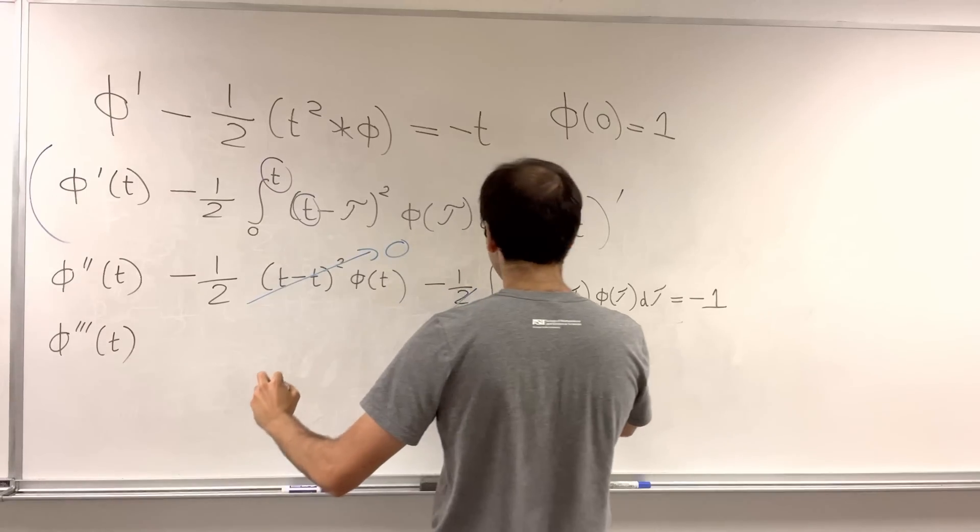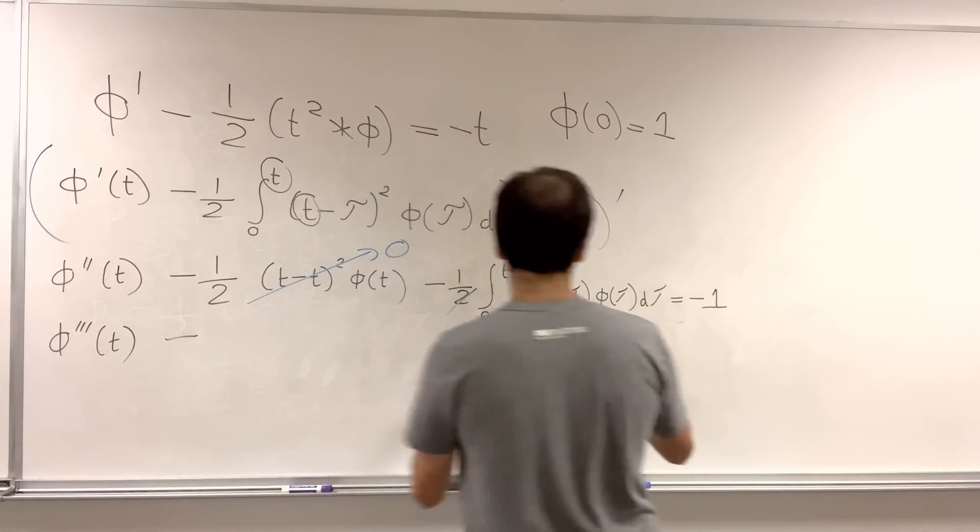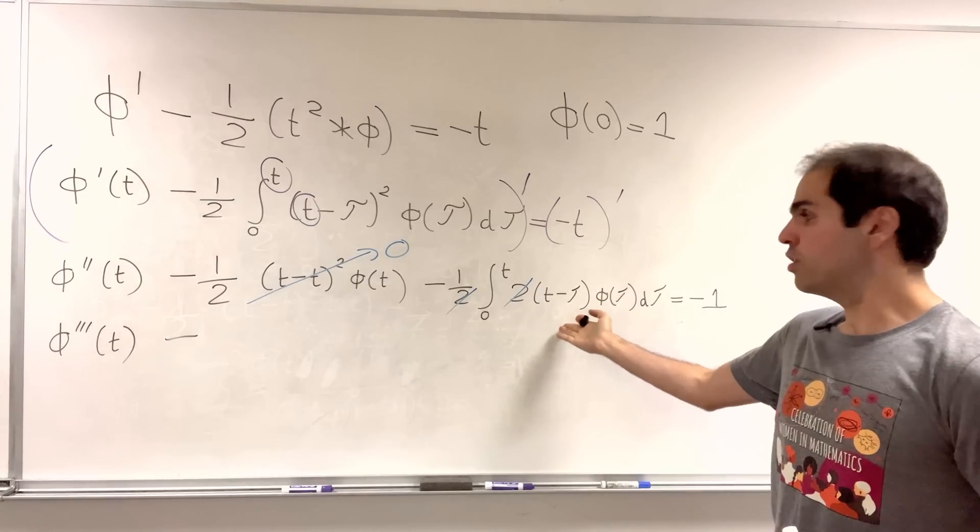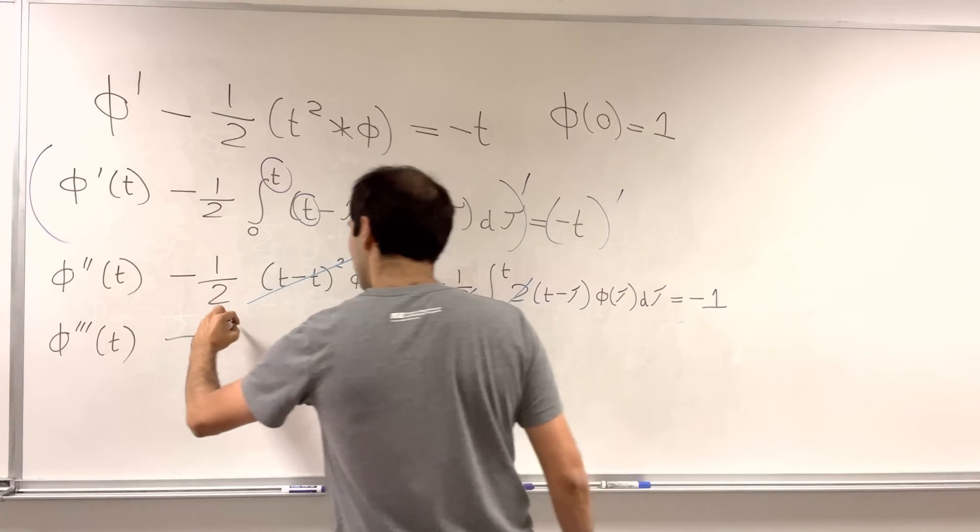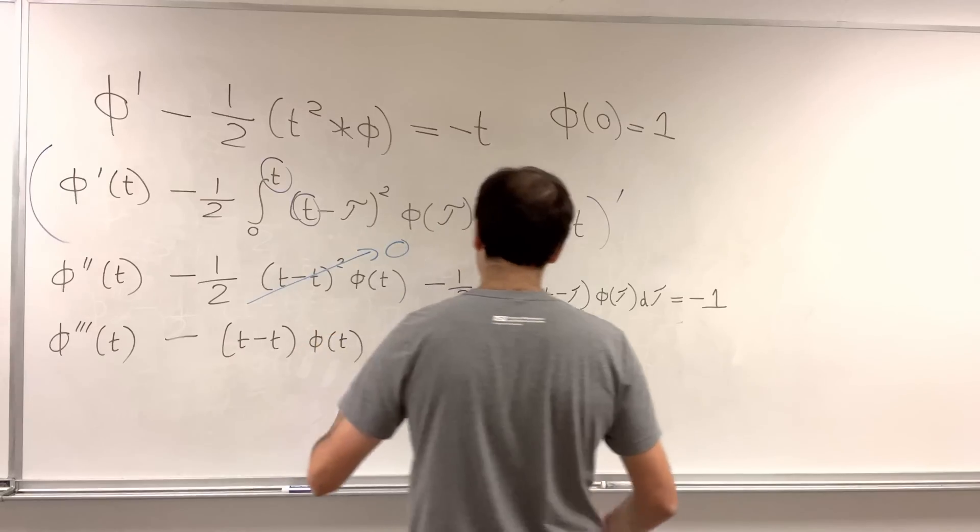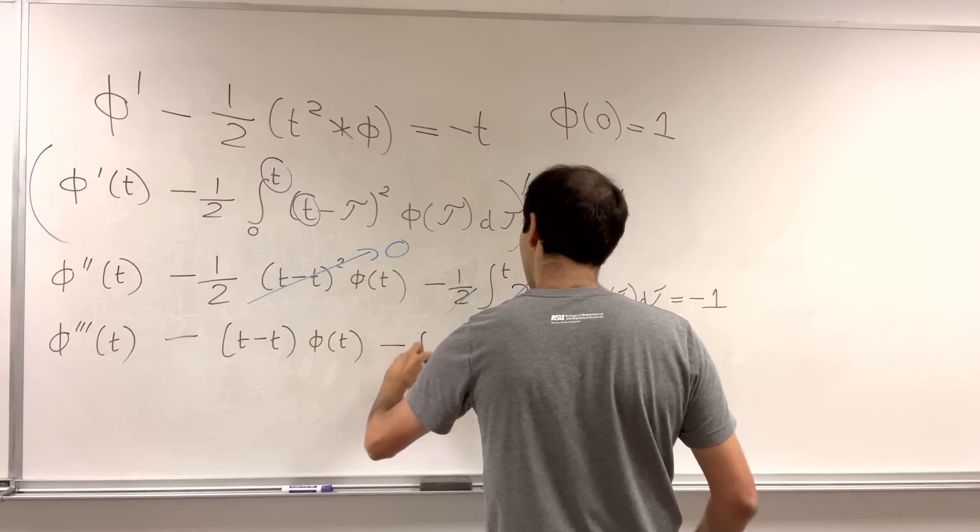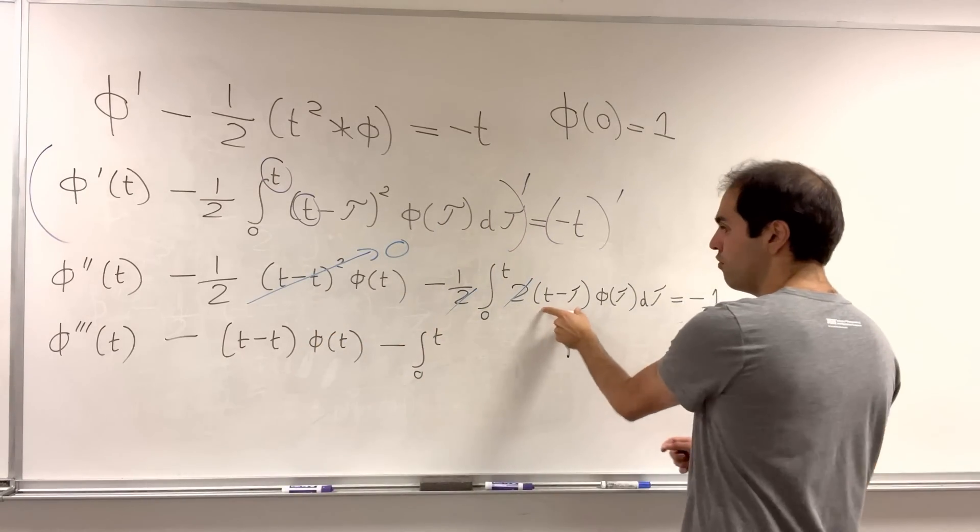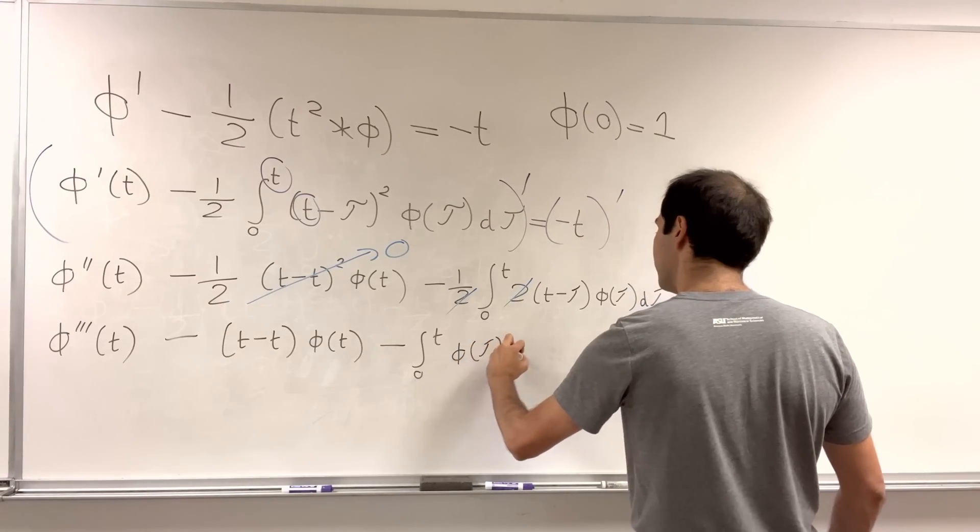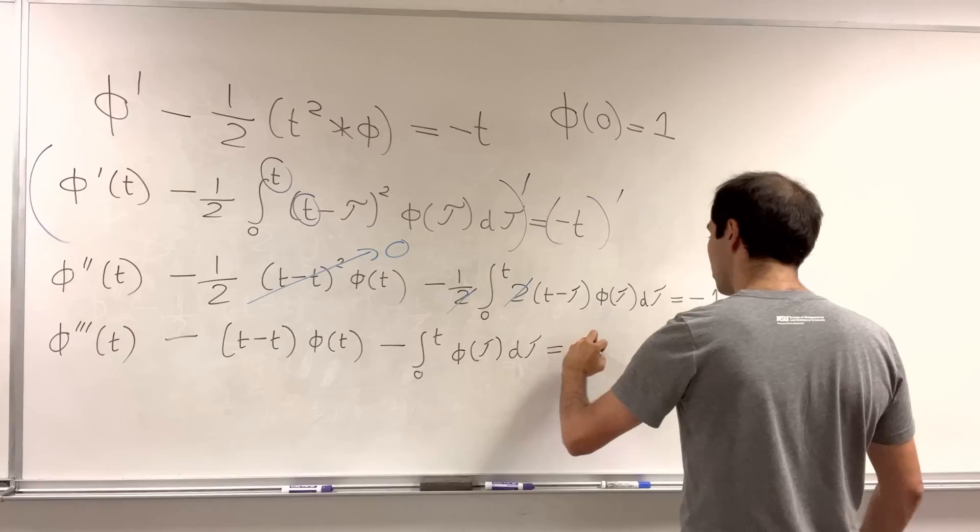So, phi triple prime of t minus, again, same thing. Derivative of the integral is just a function. So, t minus t, phi of t, minus integral from zero to t of the inside. So, derivative of this is one. So, just phi of tau, d tau equals zero.